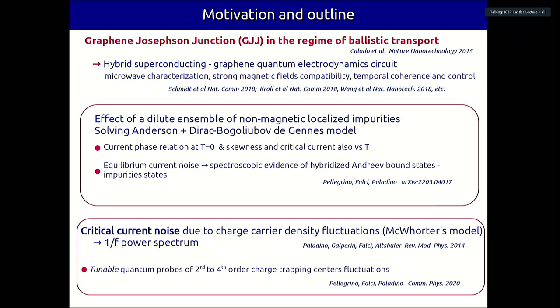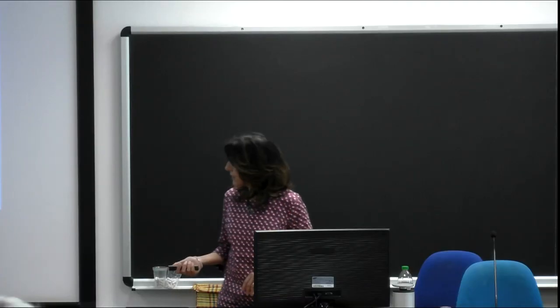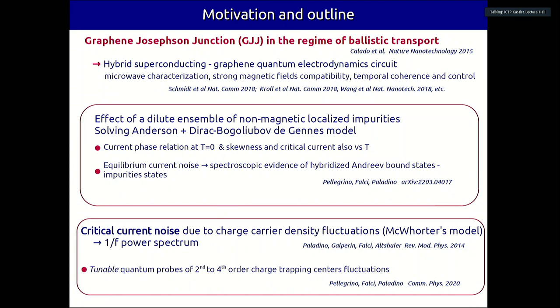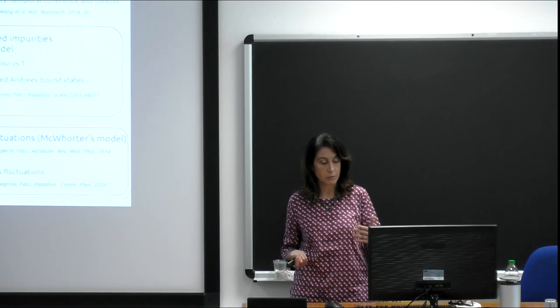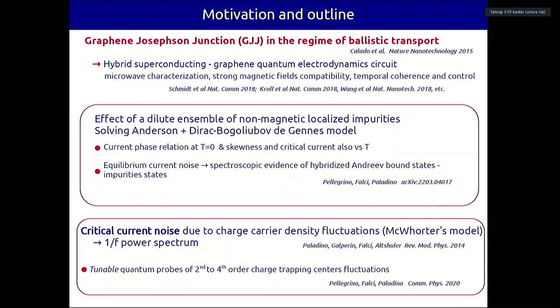The topic I'm going to tell you about today is on these systems. In particular, what we did was to investigate the effect of a dilute ensemble of microscopic impurities, which we model with the Anderson model, using the Dirac-Bogoliubov-de Gennes model for the graphene. We found how the current-phase relation is modified by the presence of these microscopic impurities, modeled quantum mechanically, and how their presence influences the skewness and critical current, which have a peculiar temperature dependence due to these impurities.